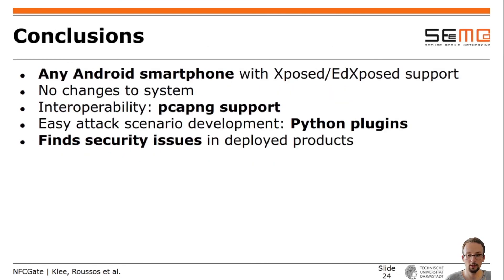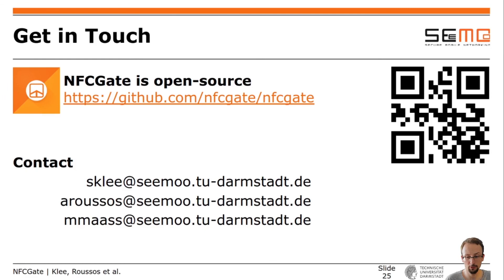Concluding NFCGate: it is a smartphone-based NFC toolkit supported by any Android smartphone with Xposed or at-Xposed support. It does not require changes to the system image and has interoperability with standard tools like Wireshark. Our Python plugin system allows developing and testing attack scenarios easily, helping find real security issues in widely deployed products. If you want to get in touch with us, visit NFCGate on GitHub or send us an email. Thanks for your attention.